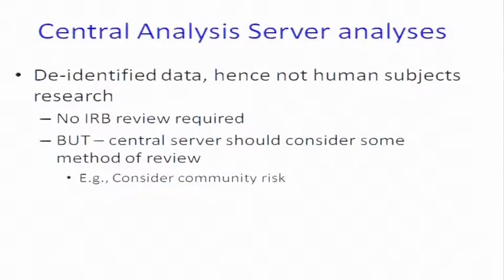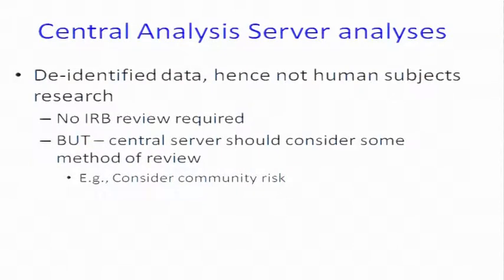So I think the server has to look at how the data is going to get in, what the informed consent process is, and what the institutional requirement will be. The central analysis server, in terms of the analyses — to my read, it's de-identified data, hence it is not human subjects research. You do not need an IRB action. If you come back and say genetic information is identifiable, the game will change. I think the central server has to have some level of review as you're doing larger and larger data sets, particularly regarding community risk.